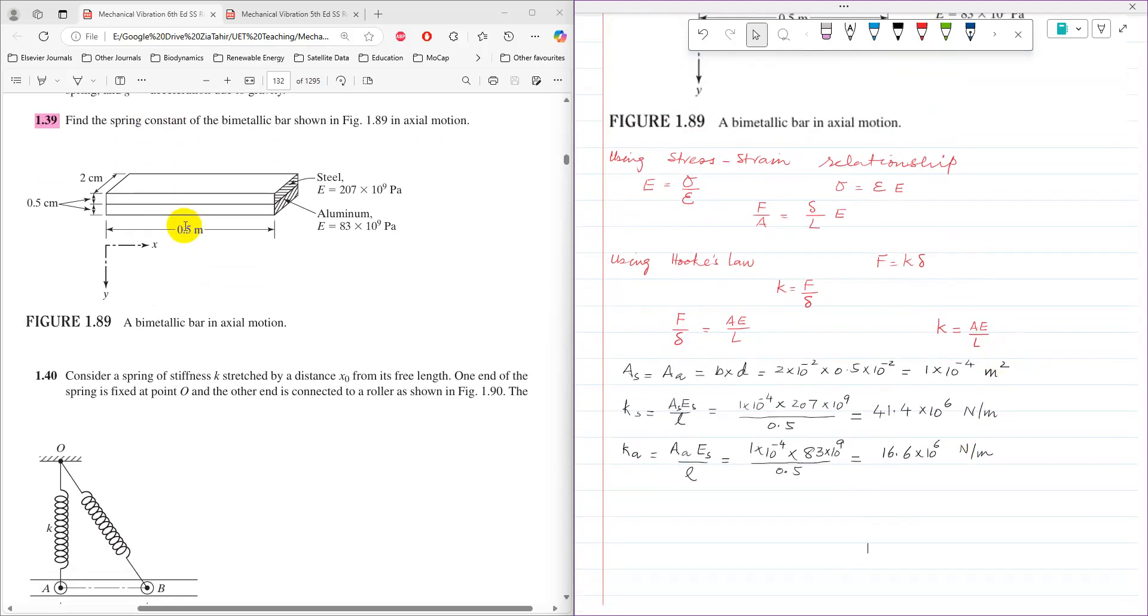To find the equivalent spring stiffness, we must determine if the strips are connected in series or parallel. Since both strips in the bimetallic bar are bonded together, when force F is applied in the axial direction, they have the same deformation and axial displacement. The total load is shared by both strips when applied perpendicular to the cross-sectional area.